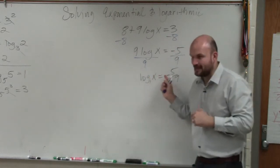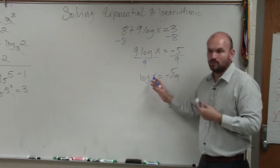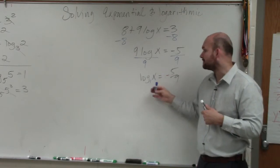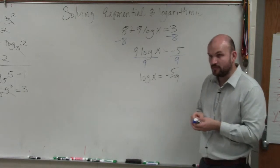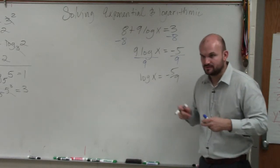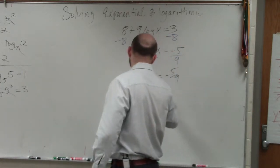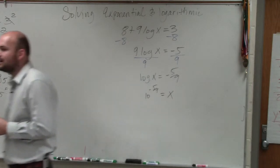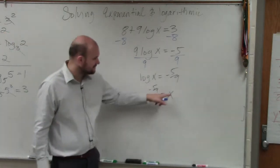So to do that, you can raise it to the power on each side like we did with logarithms. Or, what I prefer to do is rewrite it in exponential form, which we started the class off with, which would have been 10 to the negative 5 ninths is equal to x. So by rewriting it in exponential form, I can now solve for this.